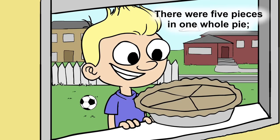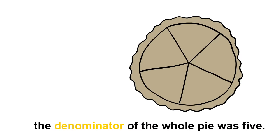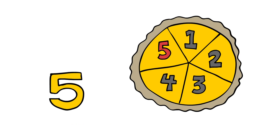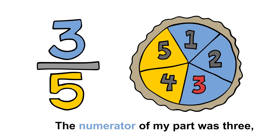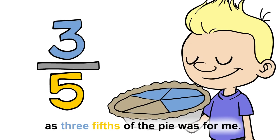There were five pieces in one whole pie. The denominator of the whole pie was five. The numerator of my part was three, as three-fifths of the pie was for me.